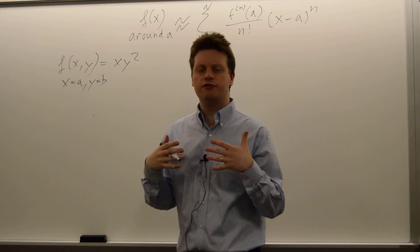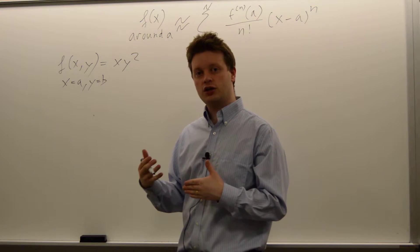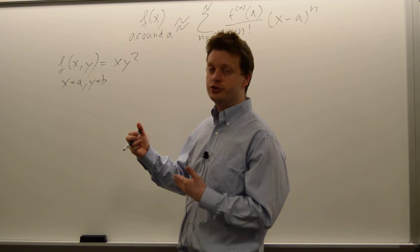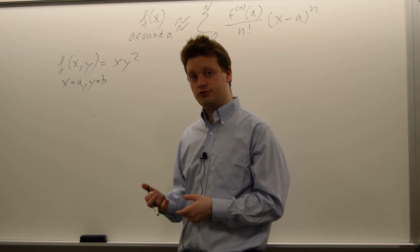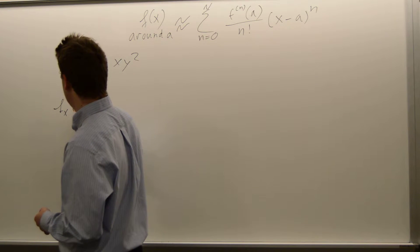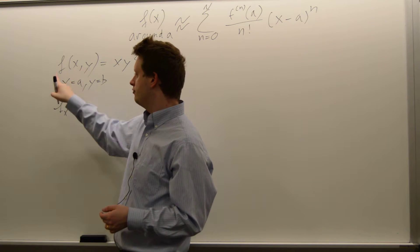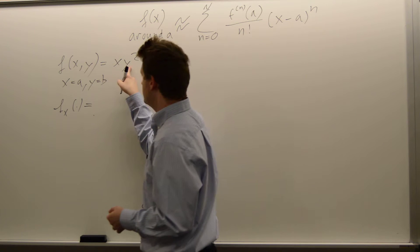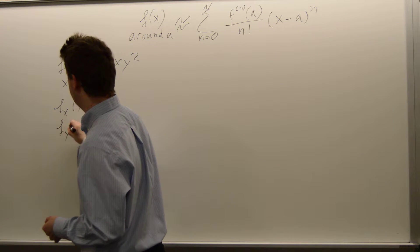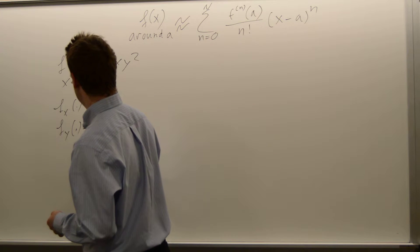Let's start with a first-order Taylor approximation for this case. For the first-order approximation we need the first derivatives. We have two variables, so it will be two partial derivatives. The partial derivative of f with respect to x is just y squared, and the partial derivative with respect to y is 2xy.